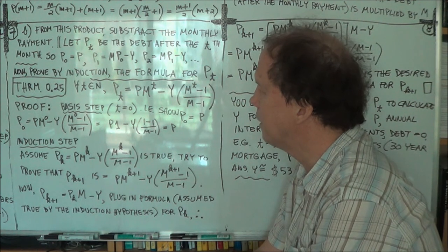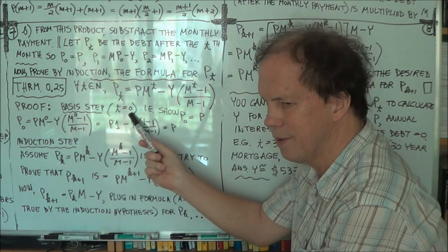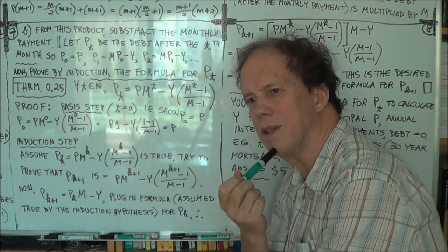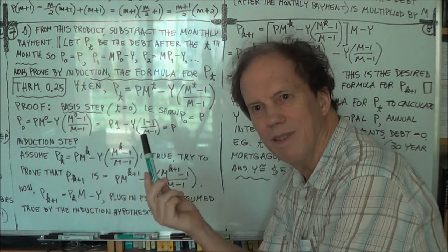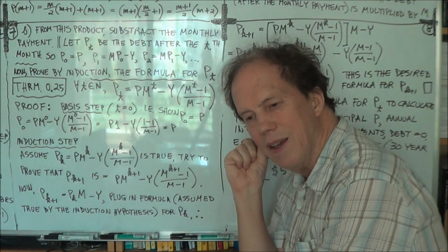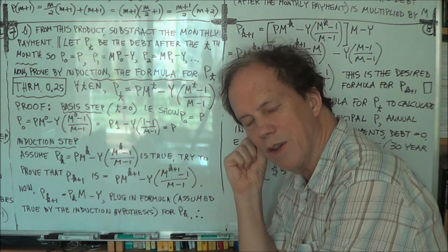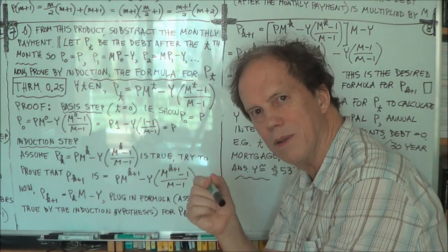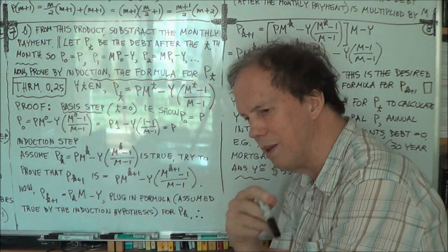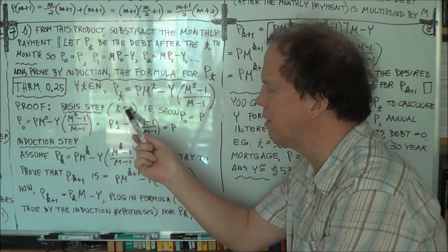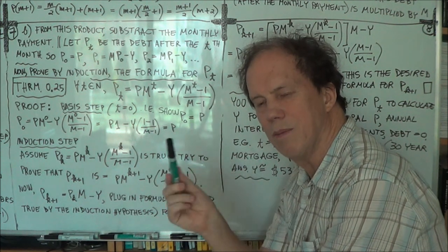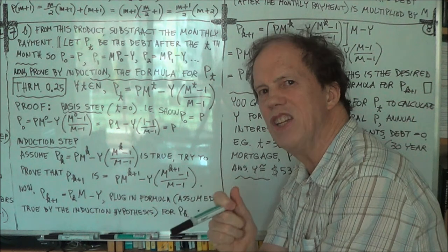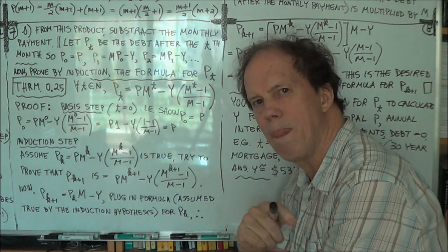Now, the basis step: we don't have to start at 1, we can start at 0. The starting integer doesn't really matter much. You can start at some integer B. If you can prove the basis step is true for integer B, your inductive step would show it's true for B plus 1, then B plus 2, and so on. So if you start at 0, the inductive step shows it's true for 0, then 1, then 2, and so on. So let's start at 0.